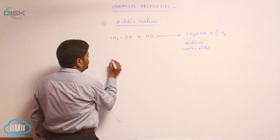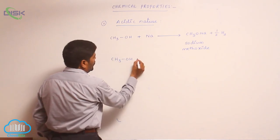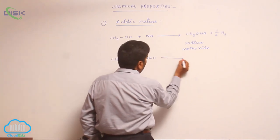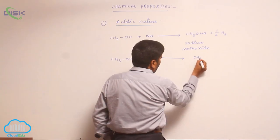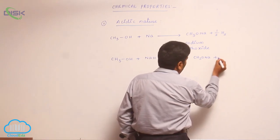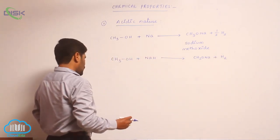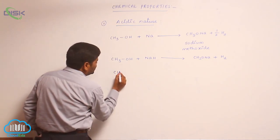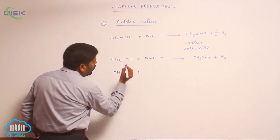Second one, methyl alcohol also reacts with sodium hydroxide to liberate H2 gas and forms sodium methoxide, due to acidic nature of alcohols.